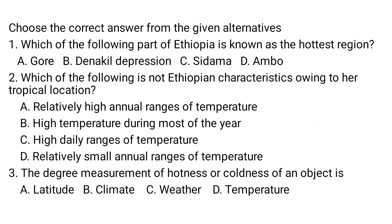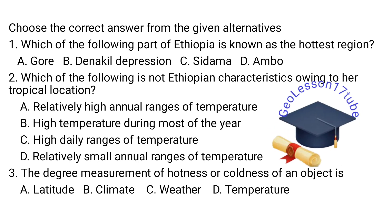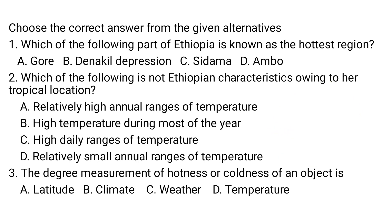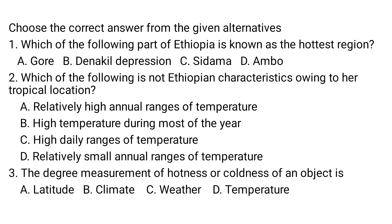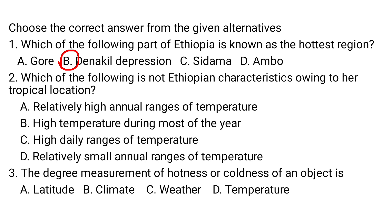Question number one: which of the following parts of Ethiopia is known as the hottest region? A) Gori, B) the Danakil Depression, C) Sidama, D) Ambo. The hottest areas of Ethiopia with lowest altitude — less than 500 meters above mean sea level — is the Danakil Depression.